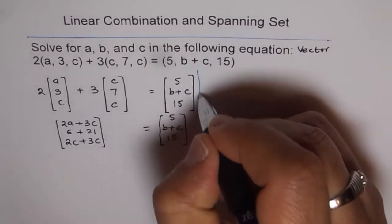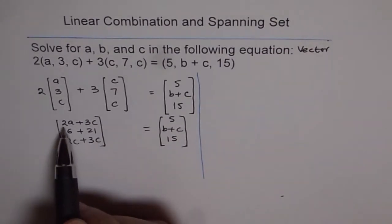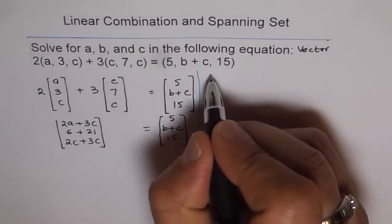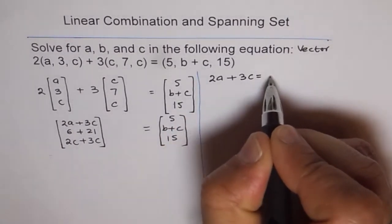We will have three equations and we need to find three variables. So, it is 2a plus 3c is equal to 5. That becomes our first equation. 2a plus 3c equals to 5.